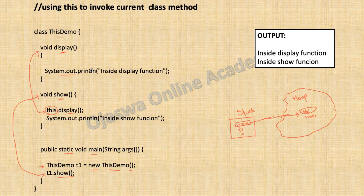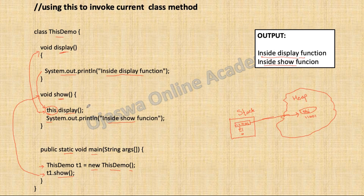Code inside the display method executes: System.out.println — the string inside display will be printed to the output screen. Control comes back, and the next statement executes: System.out.println inside the show method. The string inside show method will be printed to the output screen.